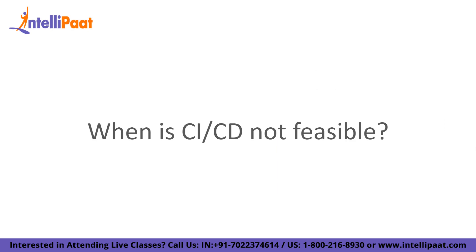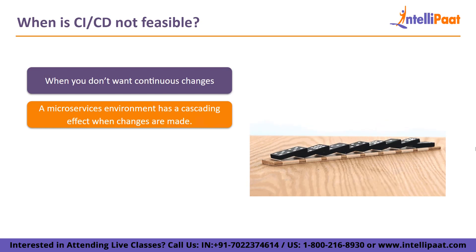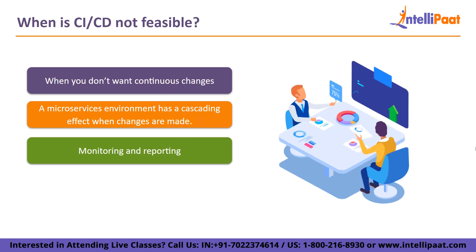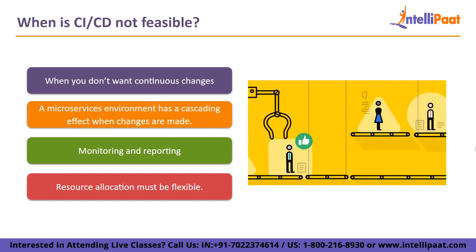When is CICD not feasible? Continuous change may not be appreciated by everyone. The user is unaware of many changes that take place during CICD, such as those affecting back-end databases or business processes. A microservices environment has a cascading effect when changes are made — one single change made with CICD in a microservices context can affect numerous different interactions and might have negative effects on other service chains. Continuous change necessitates ongoing observation by reporting, and real-time monitoring and reporting are required to swiftly resolve any issues. Additionally, resource allocation must be flexible — developers and testers might not foresee resource and performance impacts of a CICD modification unless it is rolled out with extensive testing beforehand.